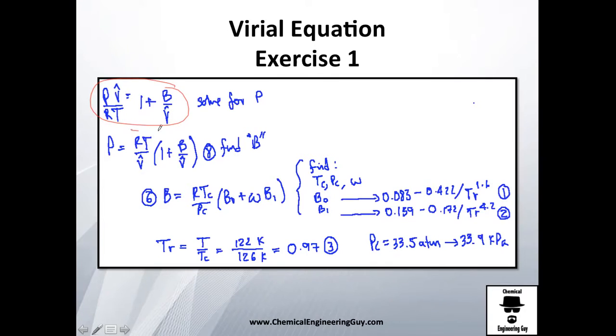Let's solve for P. First thing first, let's see if we can isolate P, which I think we can do. I got this about here - yes we can do it. Now we have everything but B and the volume here, so let's calculate B first. B by definition is this formula number six.